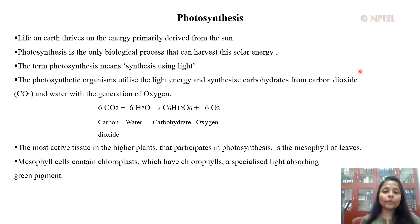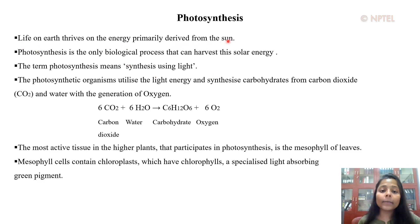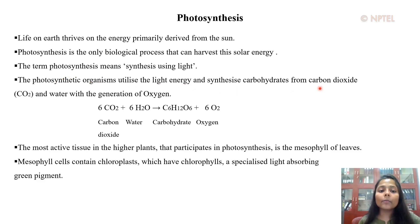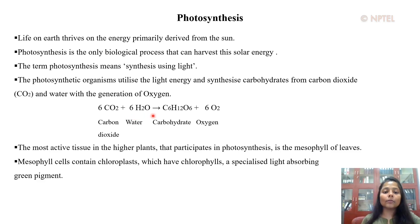The main function of chloroplast is photosynthesis. The word photosynthesis literally means synthesis using light. Life on earth thrives on the energy primarily derived from the sun, and photosynthesis is the only biological process that can harvest this solar energy. The photosynthetic organisms utilize light energy and synthesize carbohydrates from carbon dioxide and water with the generation of oxygen. The reaction of photosynthesis can be summarized as: 6CO2 + 6H2O in the presence of chlorophyll and light produces C6H12O6 (a carbohydrate) and 6 oxygen molecules.